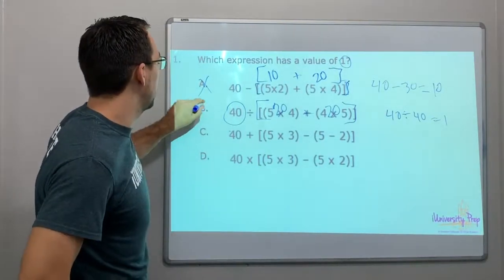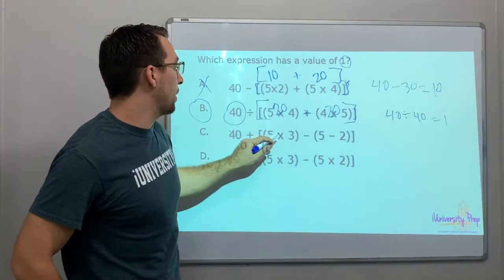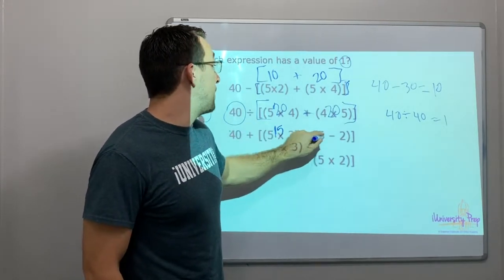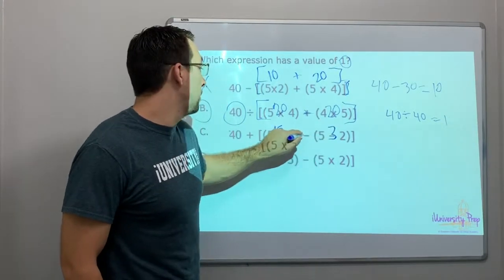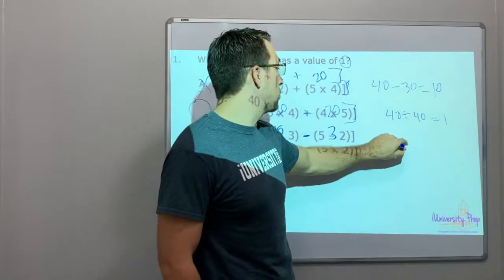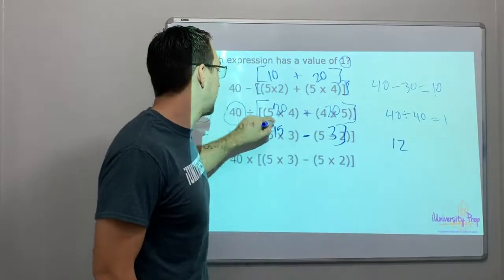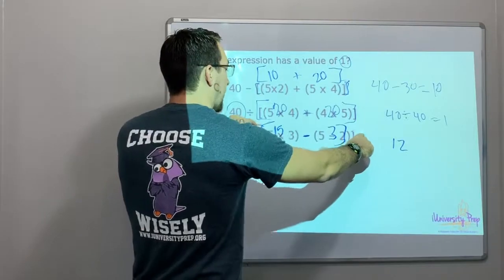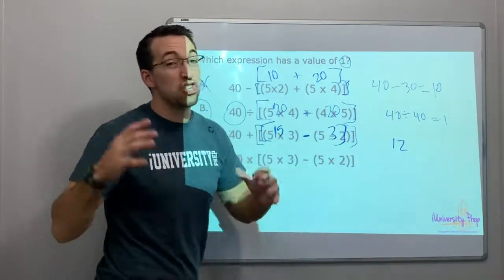Let's just do this for practice. 5 times 3 is 15. 5 minus 2 is 3. Okay, 15 minus 3 is 12. So that's 12 because we have to do the bracket after you do the parentheses.